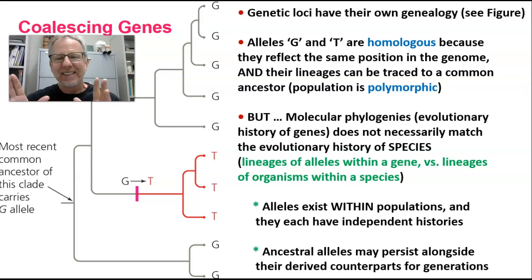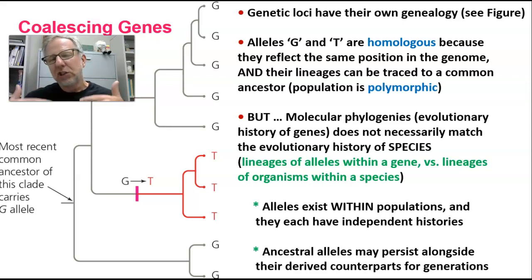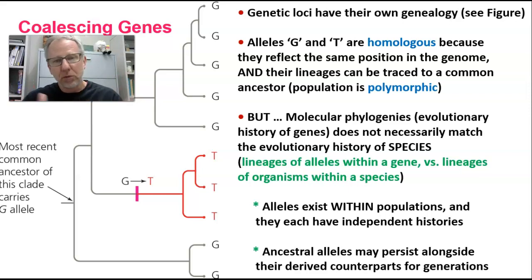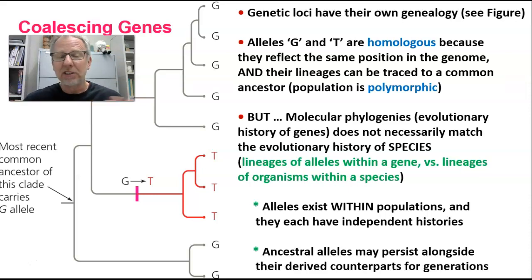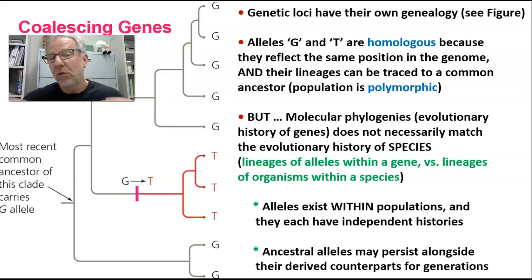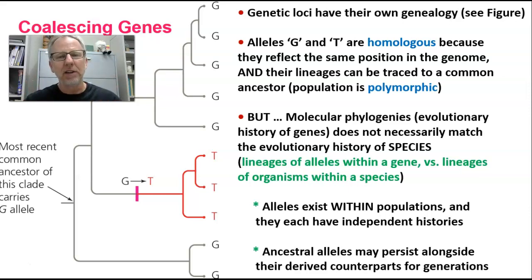These alleles exist within populations and each have their own independent history. We can trace and track the history of each allele in a population — that's a huge endeavor, of course. And once an allele mutates and we have a new form — like both the G form and the T form — you still have that ancestral form sticking around. It doesn't go away just because there's a mutation. Now within this one population you have the ancestral alleles like the G version persisting along with the more derived version, the T version.